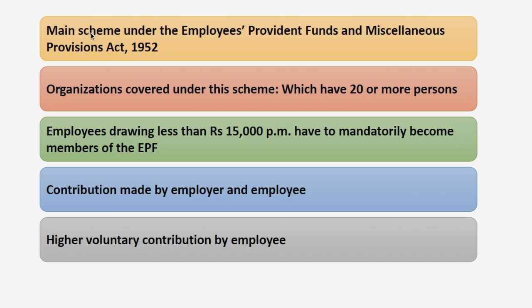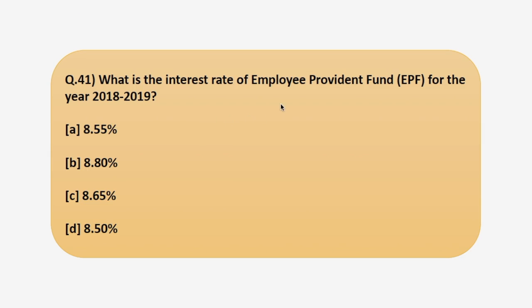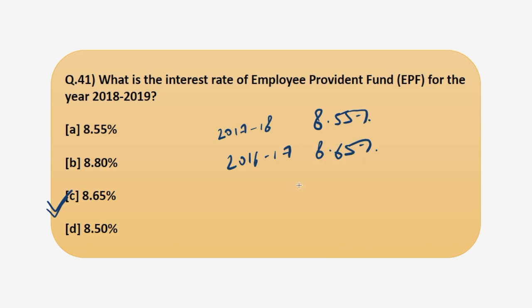Now let's move back to the question to answer it. The answer is 8.65%. In 2017-18 it was 8.55%, and in 2016-17 it was 8.65%. Now let's move to the next question for today.